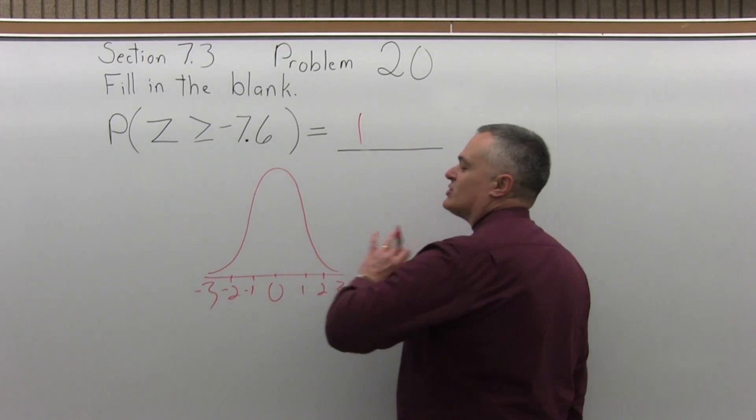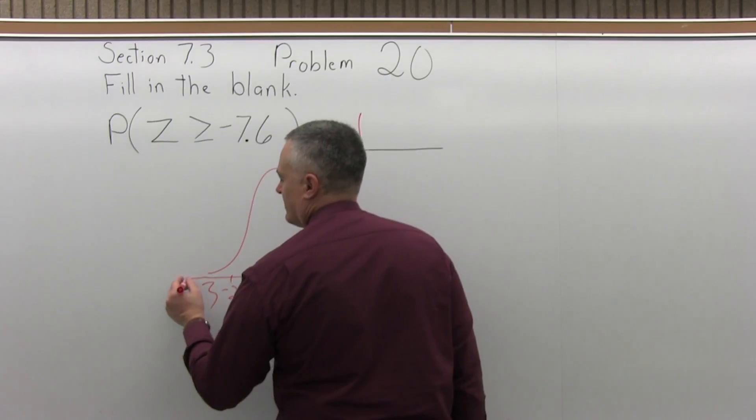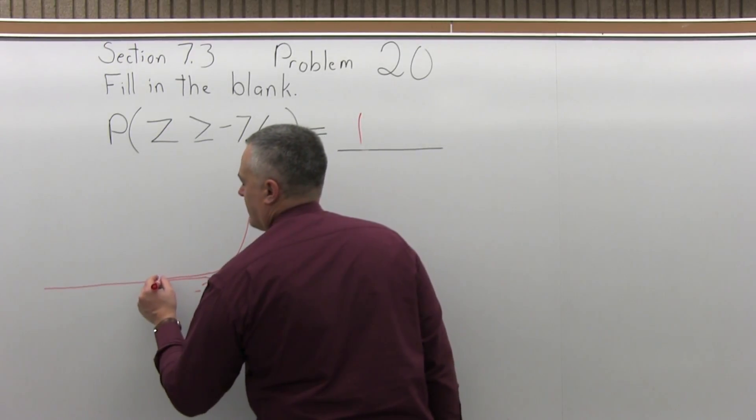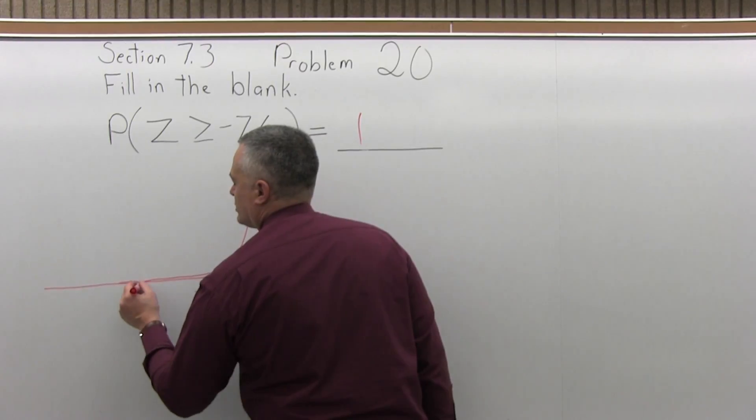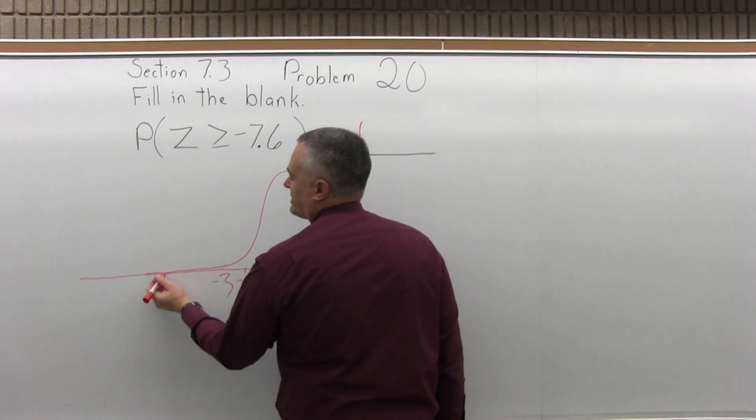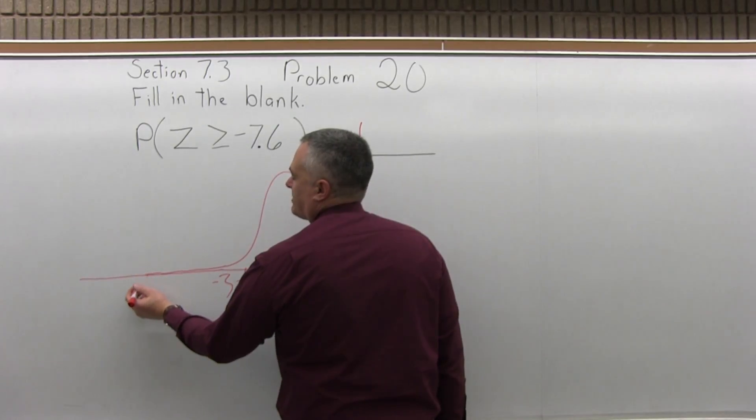Negative 7.6 is so far to the left of the negative 3. And again, the bell curve doesn't ever really stop. It goes forever and it gets closer and closer to the horizontal line, never really touches despite how my sloppy picture looks here.